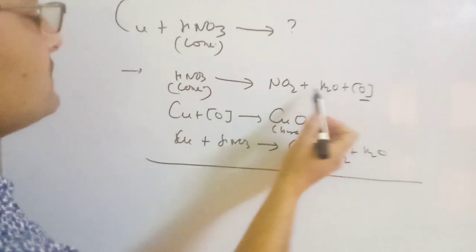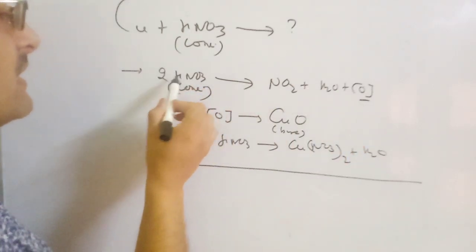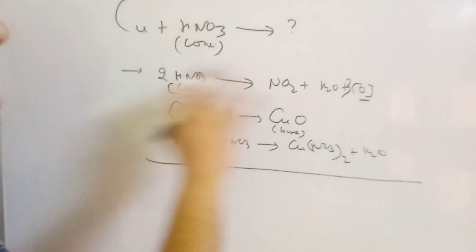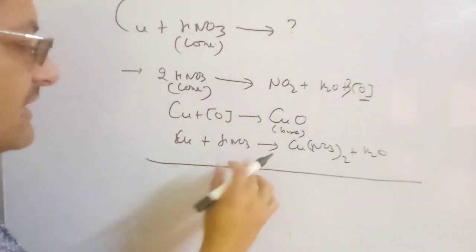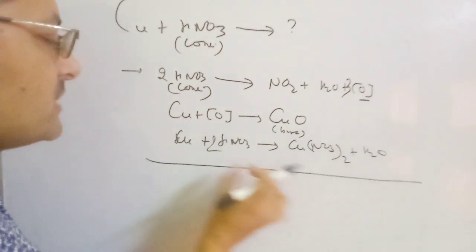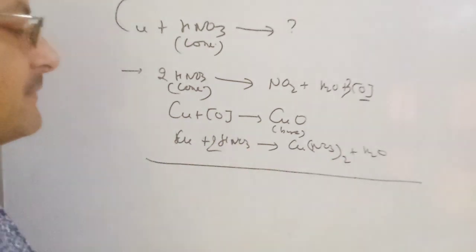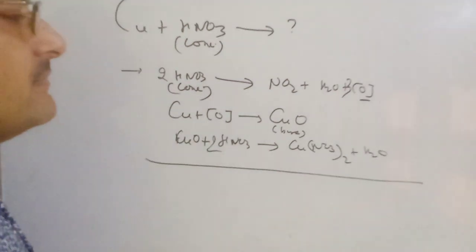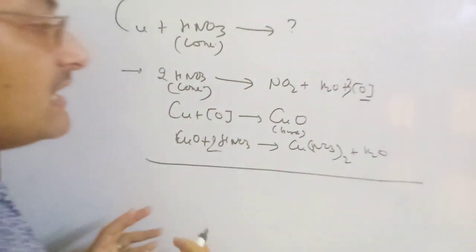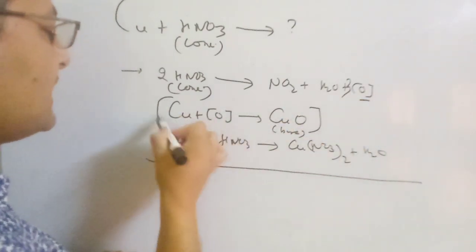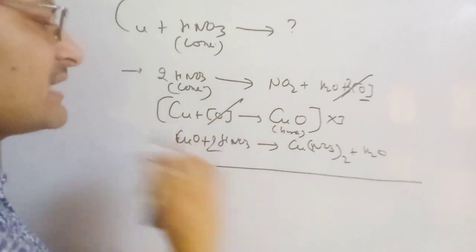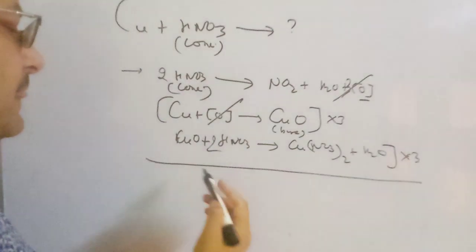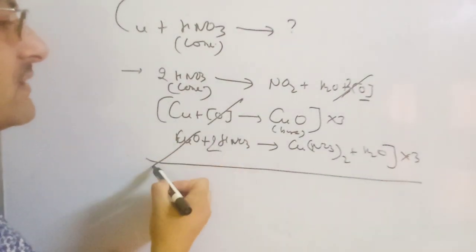Now we balance each partial equation by hit and trial method. For HNO₃ decomposition: 1 nitrogen, 1 nitrogen — balanced; 2 hydrogen, 1 hydrogen — put 2 there; oxygen 6 on one side and 3 here — put 3 there. The reaction is balanced. For copper nitrate: put 2 to balance the nitrate ion (2 nitrate on one side, 1 on the other). Now eliminate intermediates: 3 nascent oxygen and 1 nascent oxygen — multiply by 3 to cut them down; 3 CuO and 3 CuO are cut down.